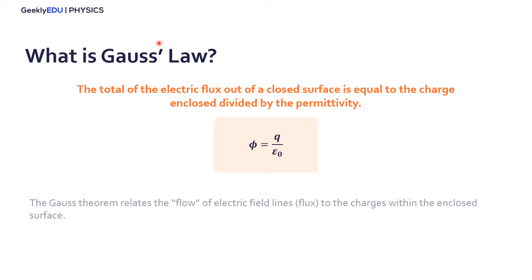So, Gauss Law, in other words, relates the flow of electric field lines, the flux, to the charges within the enclosed surface. It relates the flow with the charges. If you want to know more about how to represent these electric field lines, we have another video that's in the card, all about how to represent the electric field lines.